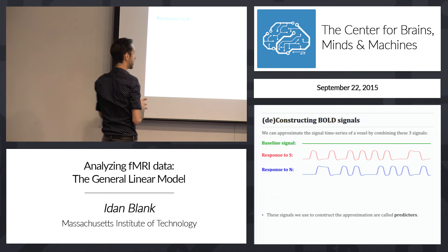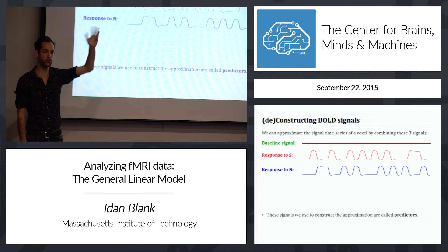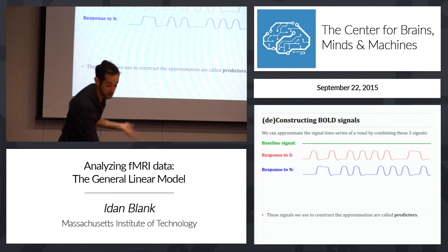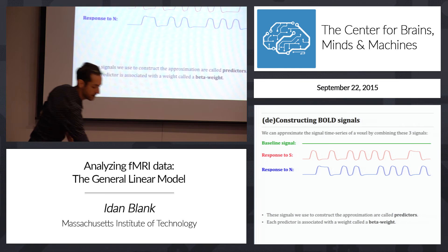These signals used to construct the approximation are called predictors. One predictor predicts a constant baseline response; another predicts how the signal should respond if it cares about sentences; and another predicts how it should respond if it cares about non-words. Each predictor is associated with a number — a weight — and we call these beta weights.